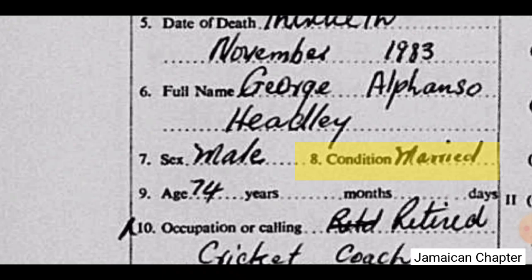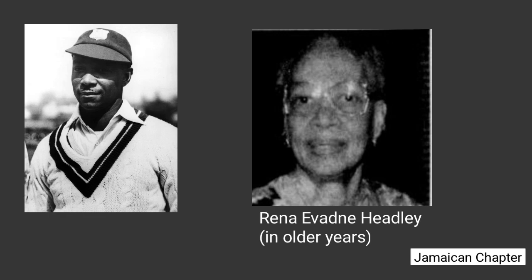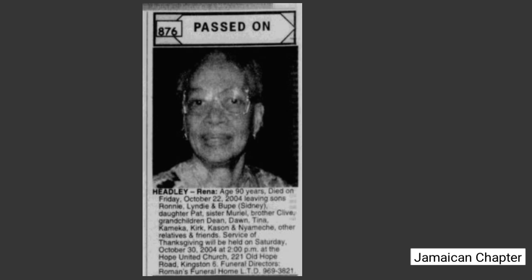He got married to a woman called Rina Evadne Sanders. They got married on February 16, 1938, at St. Joseph's DeGrove Anglican Church in Kingston. George Headley had nine children. His wife lived a long life — she died on October 22, 2004, at age 90.